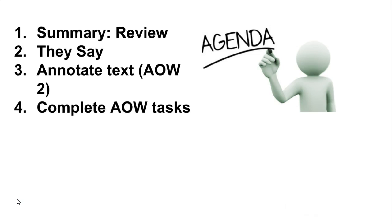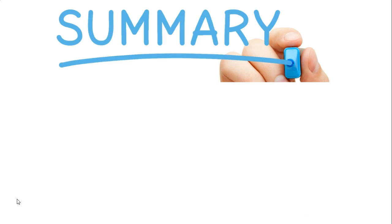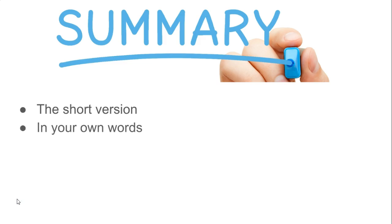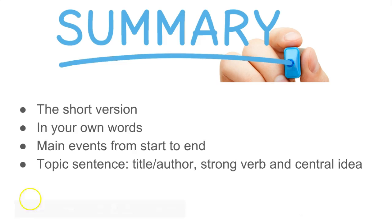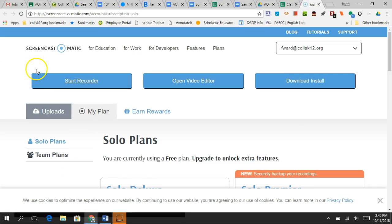So to review: summary, then 'they say,' then you annotate a text and complete the article of the week task. That is your goal today. Quick recap on summary: it's the short version of the text, in your own words, covering main events from start to end. Your topic sentence must have the title, author, a strong verb, and the essential idea.